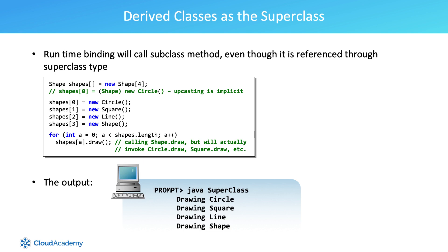One of the nice things about Java is the ability to use subclasses in the place of superclasses. What this means is that you can assign a subclass object to a superclass object reference. Additionally, the subclass does not need to be the immediate child of the superclass — the subclass could extend an object which extends the superclass. Assigning this subclass to an object reference of a grandparent is still valid, because the grandchild object will still contain all of the characteristics of the grandparent superclass.